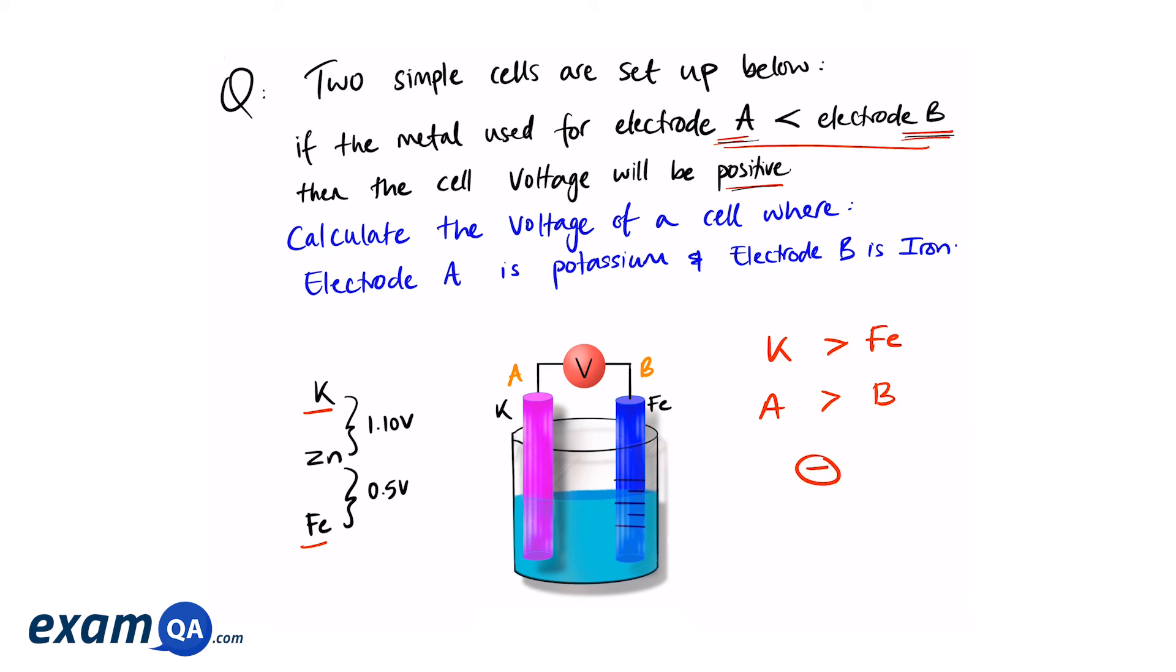The next part is working out what the difference will be. So looking at our scale, we can see the difference is going to be 1.10 plus 0.5. So that gives you 1.6 volts. So the final answer should be minus 1.6 volts.